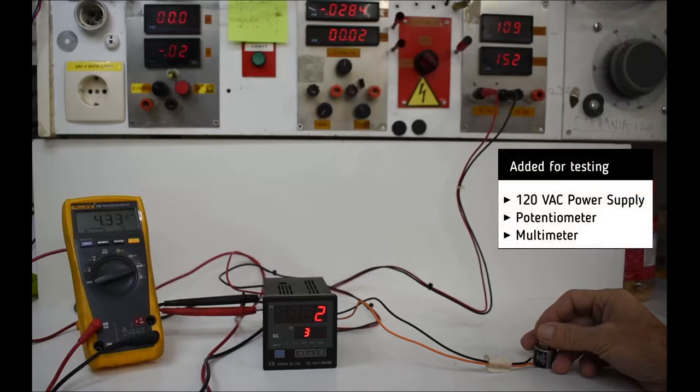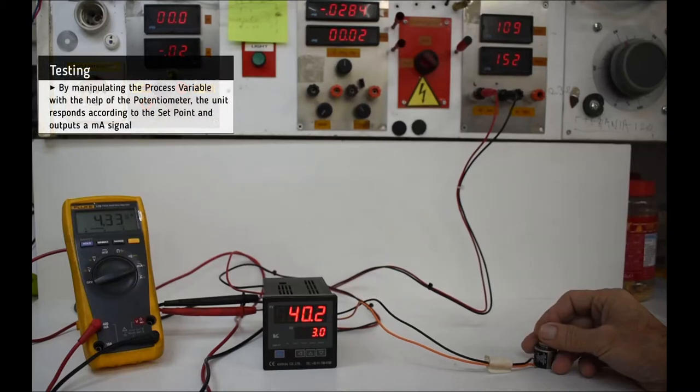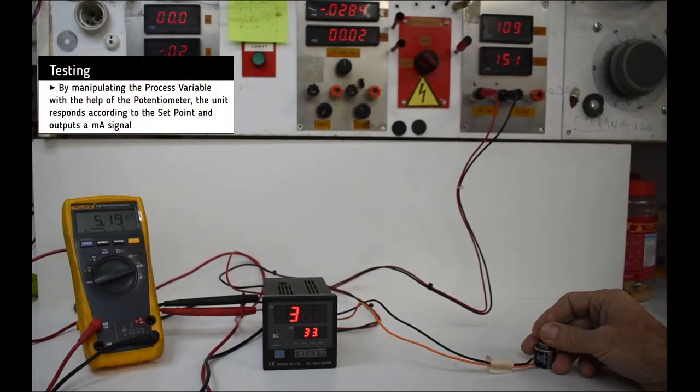For the testing of the first controller, we add a 120V AC power supply, a potentiometer, and a multimeter in order to measure the milliamp output. By manipulating the process variable with the help of the potentiometer,